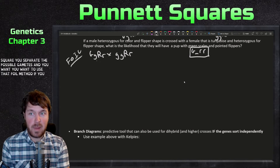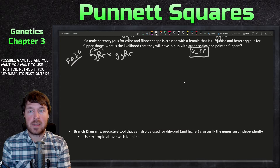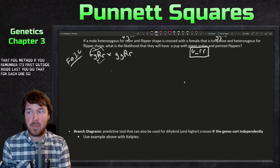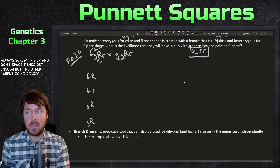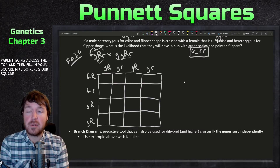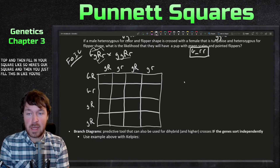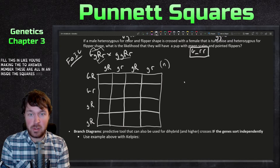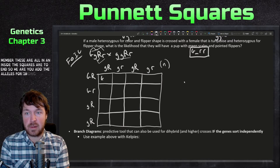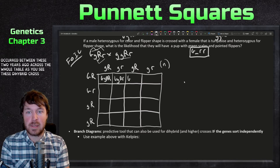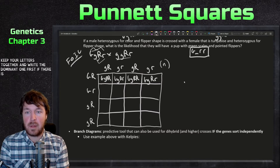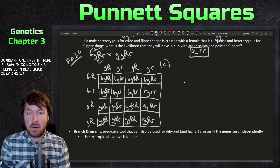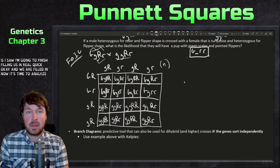Set up your 4×4 dihybrid Punnett square. Write the n gametes along the top and side, then fill in the 16 boxes combining the alleles as if a fertilization event occurred, always writing the dominant allele first. Dihybrid crosses take a while to fill in, so keep your letters together and be careful.